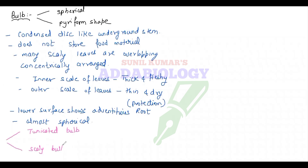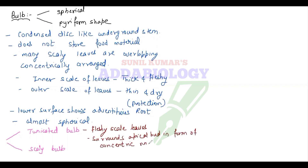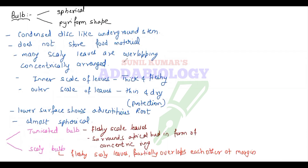There are two types of bulb — tunicated bulb and scaly bulb. In tunicated bulb, the fleshy scaly leaves partially overlap each other at the margin. Example: onion, scientific name Allium cepa. In scaly bulb we have garlic, scientific name Allium sativum.